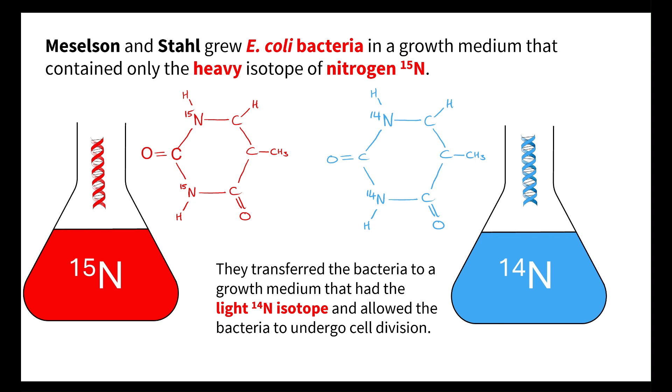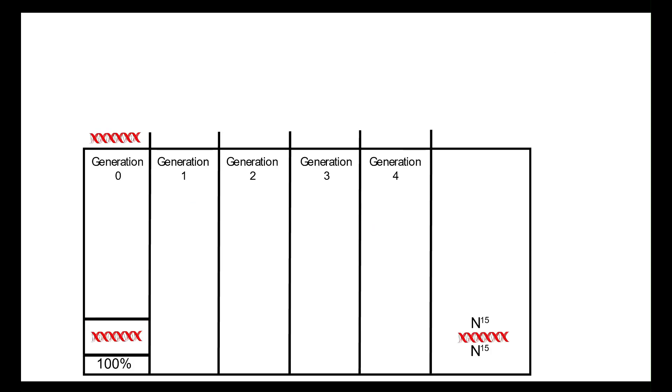They allowed the bacteria to undergo cell division and then observed it after they had centrifuged to see what had happened to the DNA at different generations. When we start with our original heavy isotope, the DNA strands contain the heavy isotope of N15. Generation zero is built with the original strand, which is N15, N15.